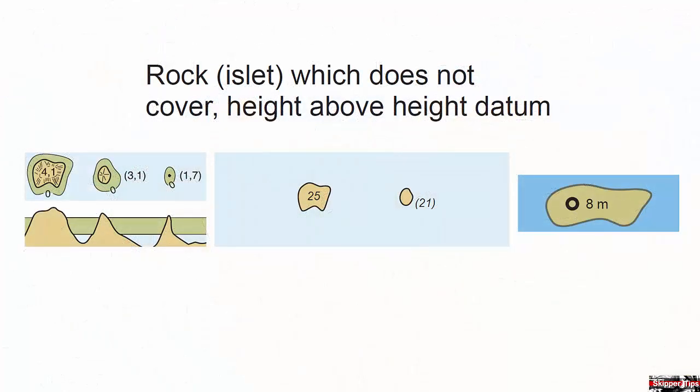Here in chart number one, all the way to the left, you see the international symbol and note how the cartographer has written the height directly onto the island if possible. But if not possible, they will write it in parentheses to one side of the islet.